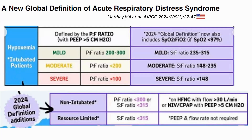Even patients on high-flow nasal cannula — not requiring intubation with PEEP or NIV with PEEP — can now be categorized as ARDS. In summary, five new elements have been added: no acute trigger required, ultrasound can be used, heart failure can be present, intubation is not needed, PaO2 is not required (saturations suffice), and HFNC patients can be included. The intent is lumping — including more patients to get better answers on treatment.